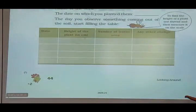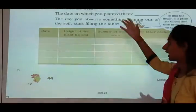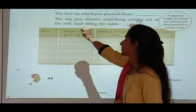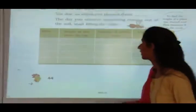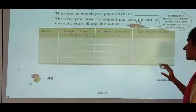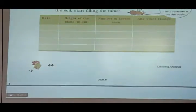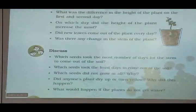Observe and record: the name of the seed you planted, the date on which you planted it, and the day you observe something coming out. You have to write all these things.